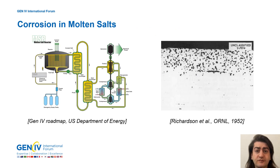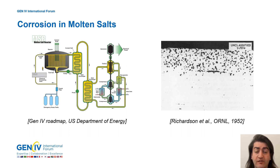In molten salt reactors, mixtures of chloride or fluoride salts are used as a coolant. They have the advantage of passive safety and higher efficiency. However, new alloys must be developed and their corrosion behavior merits special attention at a fundamental level.